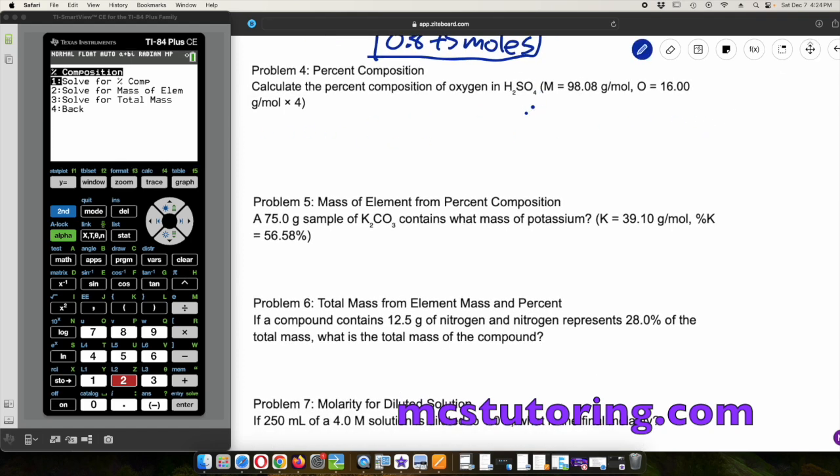Percent composition of oxygen in H2SO4. We're looking up percent comp. Oxygen is 16 grams per mole, but this is what's tricky. You see how O has a four as a subscript. That means every time you calculate the percent composition, you have to multiply whatever the oxygen is by four. So it's going to be four times 16. That's 64 grams of oxygen.